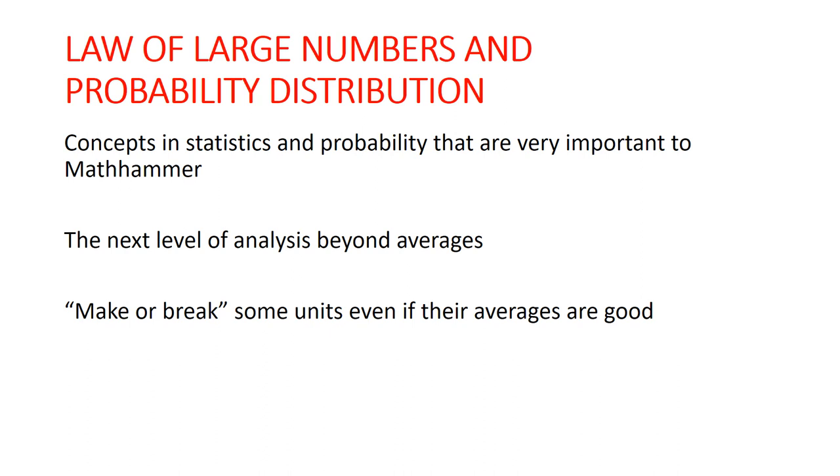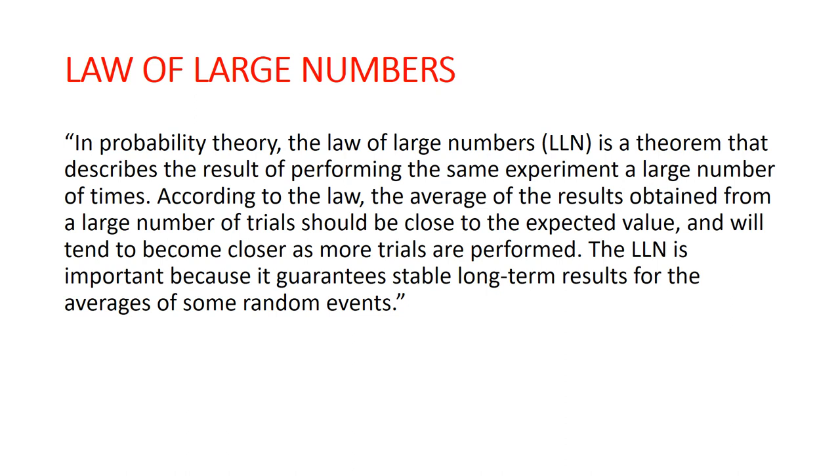Let's take a look at the definitions of these real quick to get a better understanding of what's going on here. The law of large numbers is a concept in probability theory. It's a theorem that describes the result of performing the same experiment a large number of times. According to the law, the average of the results obtained from a large number of trials should be close to the expected value and will tend to become closer as more trials are performed. The law of large numbers is important because it guarantees stable long-term results for the averages of some random events.